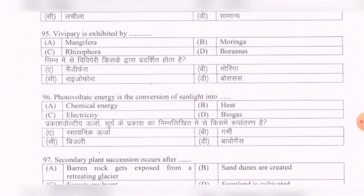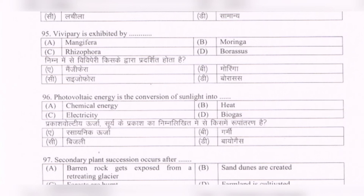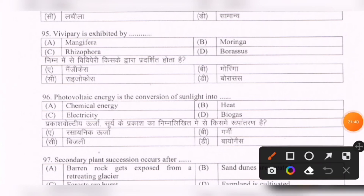Next question: Vivipary is exhibited by — options are: Mangifera, Moringa, Rhizophora, Borassus. The correct option is Rhizophora.